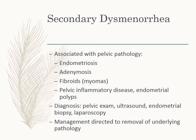Secondary dysmenorrhea is associated with a pelvic pathology such as endometriosis, adenomyosis, fibroids, pelvic inflammatory disease, or endometrial polyps. Diagnosis requires a pelvic exam, ultrasound, endometrial biopsy, and laparoscopy. Management is going to be directed to removal of the underlying pathology. Endometriosis is a very painful condition, and with adenomyosis, the tissue that normally lines the uterus begins to grow in the muscle wall of the uterus. These are very painful conditions and they're not to be dismissed — that pain is very real.